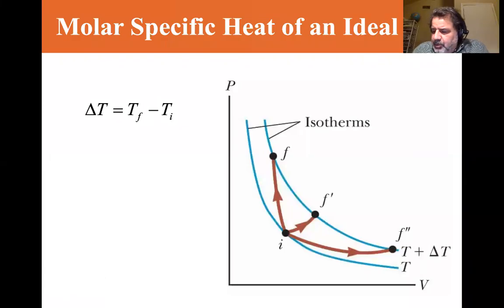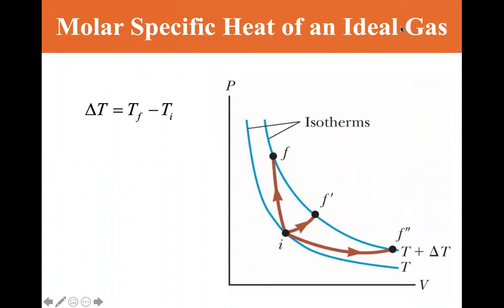We're at section 20.2, molar specific heat of an ideal gas. I'm going to dismiss my image so it doesn't interfere with the screen. And now we show a graph here of two different isotherms.